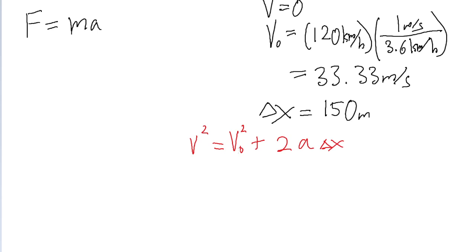So we're going to take v naught squared and subtract that from both sides of the equation, and then we're going to divide both sides of the equation by 2 delta x, so that we have an equation just in terms of the acceleration. So what we find is that acceleration is equal to v squared minus v naught squared, all divided by 2 times the displacement.